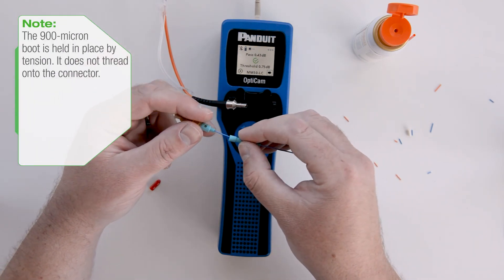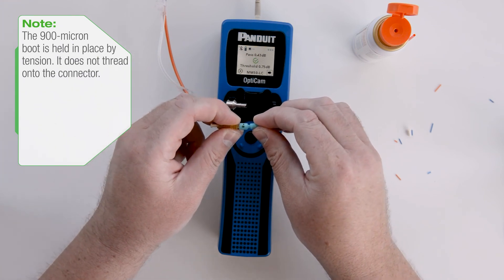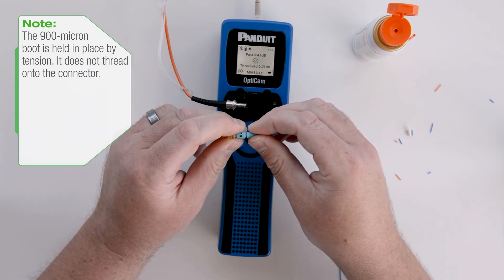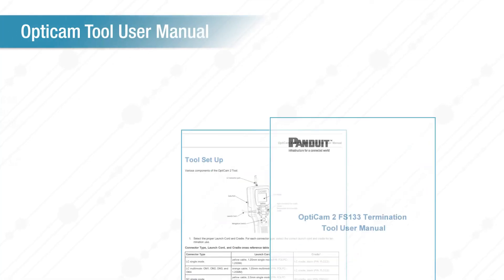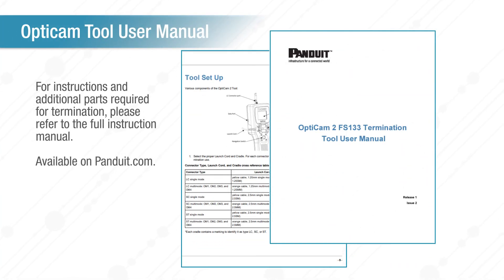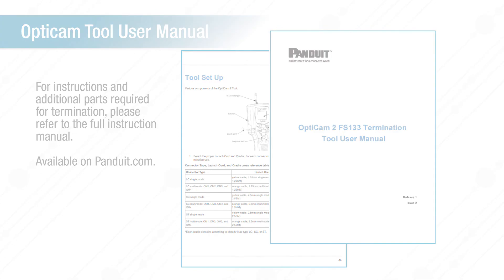This completes the termination process for a 50-micron multi-mode LC connector onto 900-micron tight-buffered cable using the opti-cam 2 tool. For instructions and additional parts required for termination onto 2 or 3 millimeter cable or 250-micron loose tube fiber with a build-up, please refer to the full instruction manual for opti-cam 2, document FS-133, available on panduit.com.